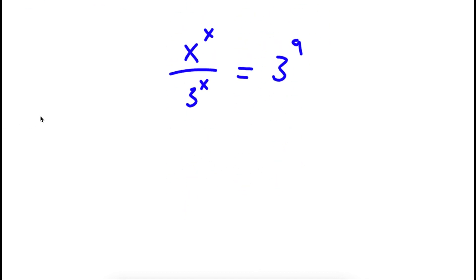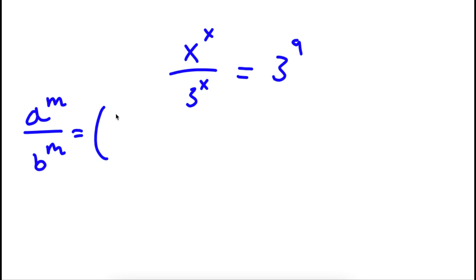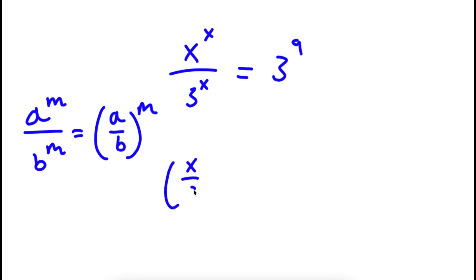Now, if I have something in the form a to the power of m over b to the power of m, this is the same thing as a over b to the power of m. So x to the power of x over 3 to the power of x can be rewritten as x over 3 to the power of x, and this is equal to 3 to the power of 9.